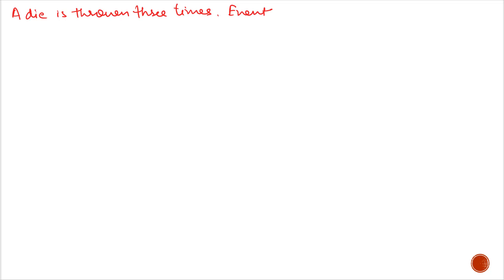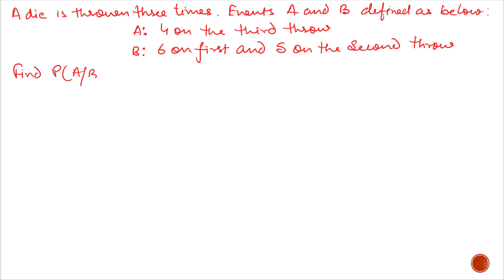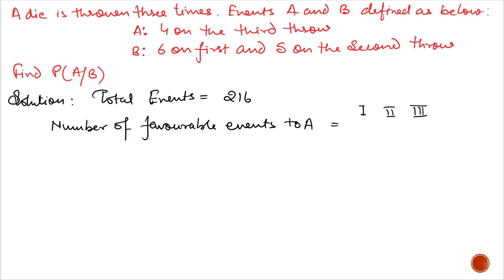Next example. A dice is thrown 3 times. Events A and B are defined as: A denotes 4 on the 3rd throw, and B denotes 6 on the 1st and 5 on the 2nd. Find the probability of A given B. Because the dice is thrown thrice, total events are 6 raised to the power 3, which equals 216. Number of favorable events to A: on the 3rd throw we have only 4, so we have 1 chance; on the 2nd throw we can take any number from 1 to 6, so 6 options; on the 1st place again 6 options. So the total number of favorable events to A are 36.